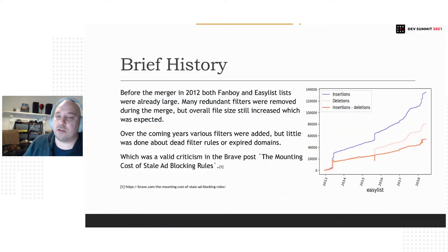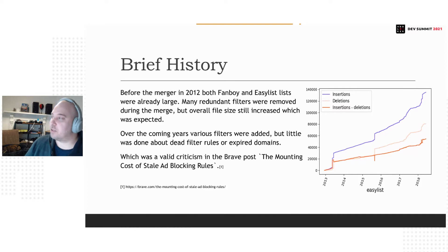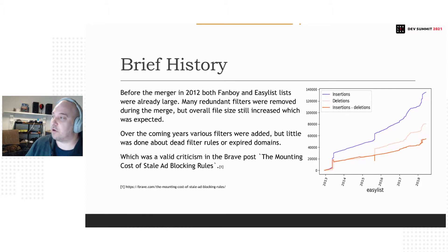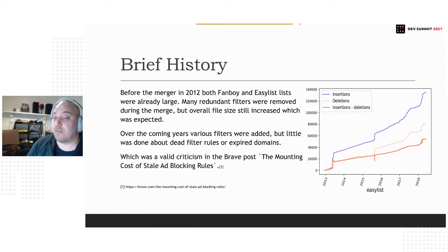Going by a brief history, you can see the file sizes for EasyList were increasing steadily over the years with little to no audit of existing filters. As you can see by the blue line, we're increasing it — adding more and more filters. Some were changed, but little was audited from previous filters. So over time, we have added a lot of filters but haven't actually removed many of them. There are a lot of dead filters, and the size of the file really reflected this.